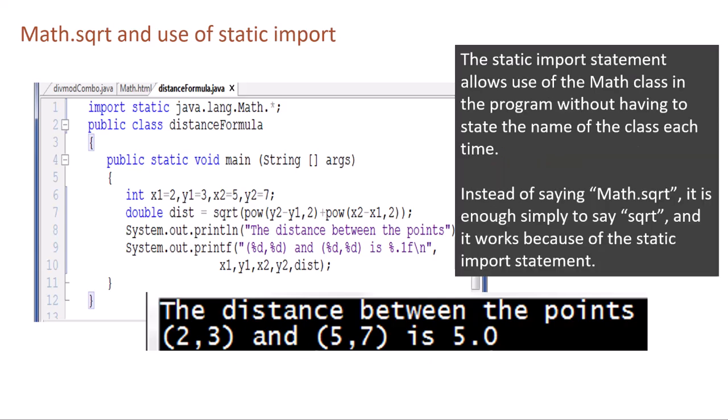int x1 = 2, y1 = 3, x2 = 5, y2 = 7. double dist = sqrt(pow(y2 - y1, 2) + pow(x2 - x1, 2)). The distance between the points (2,3) and (5,7) is 5.0.